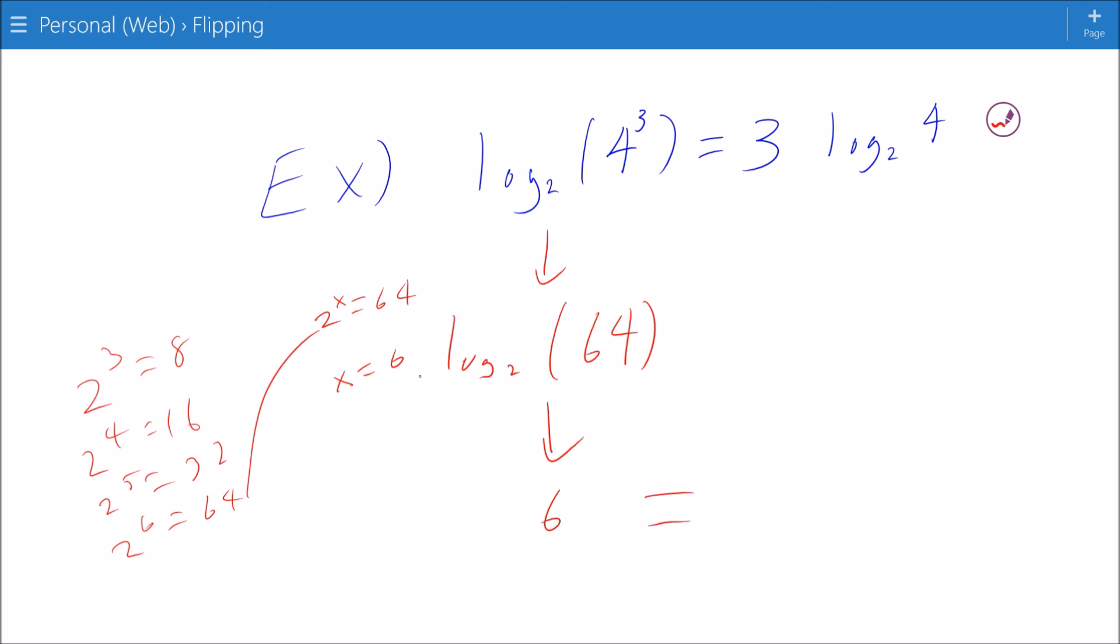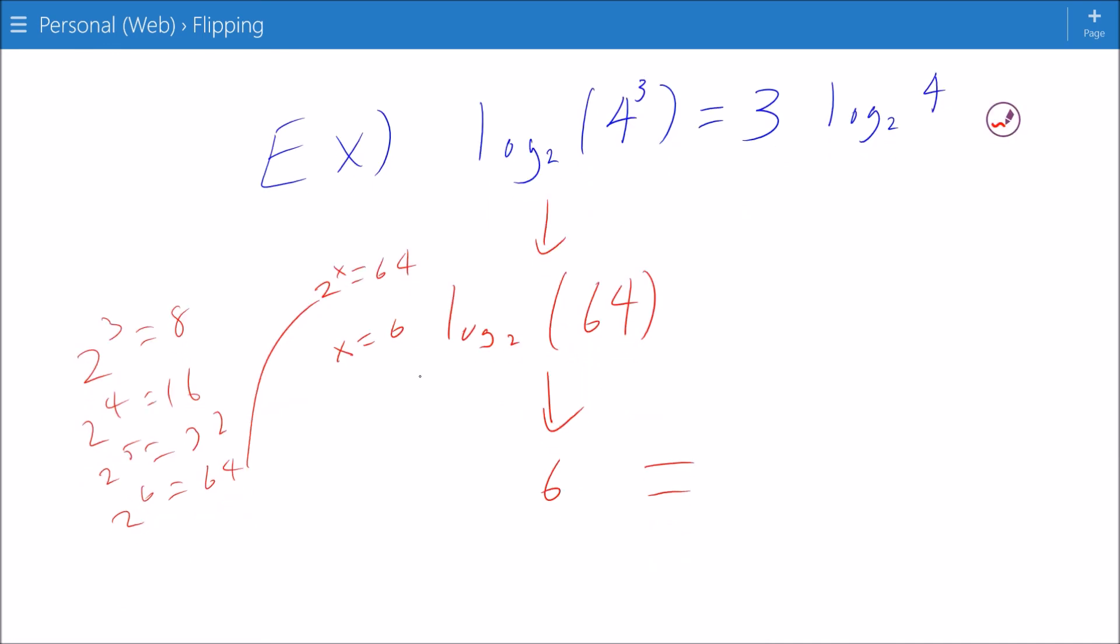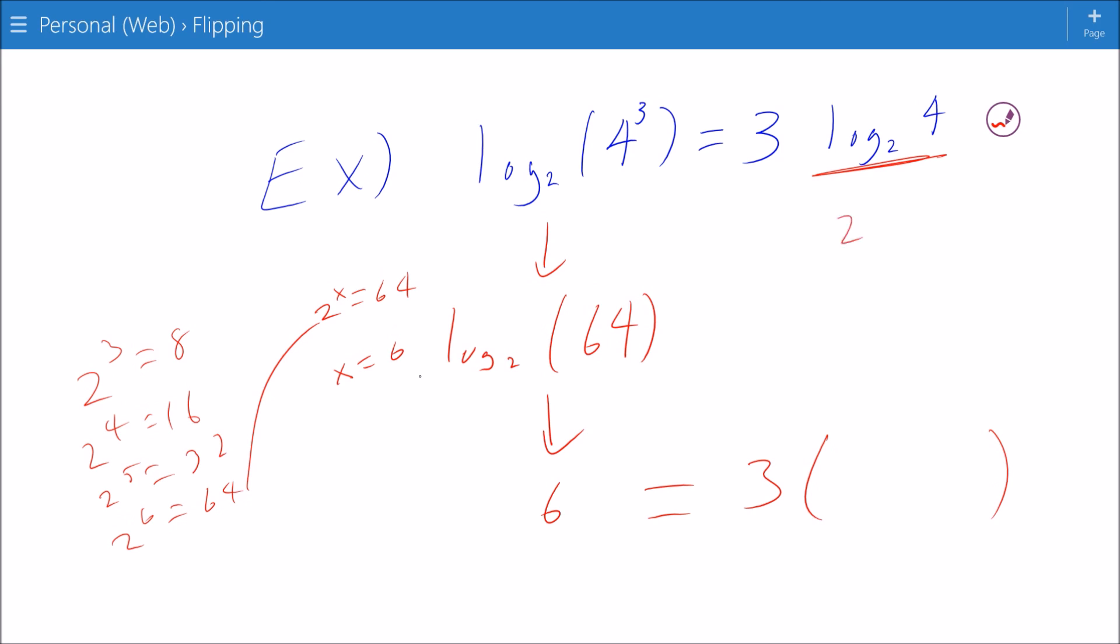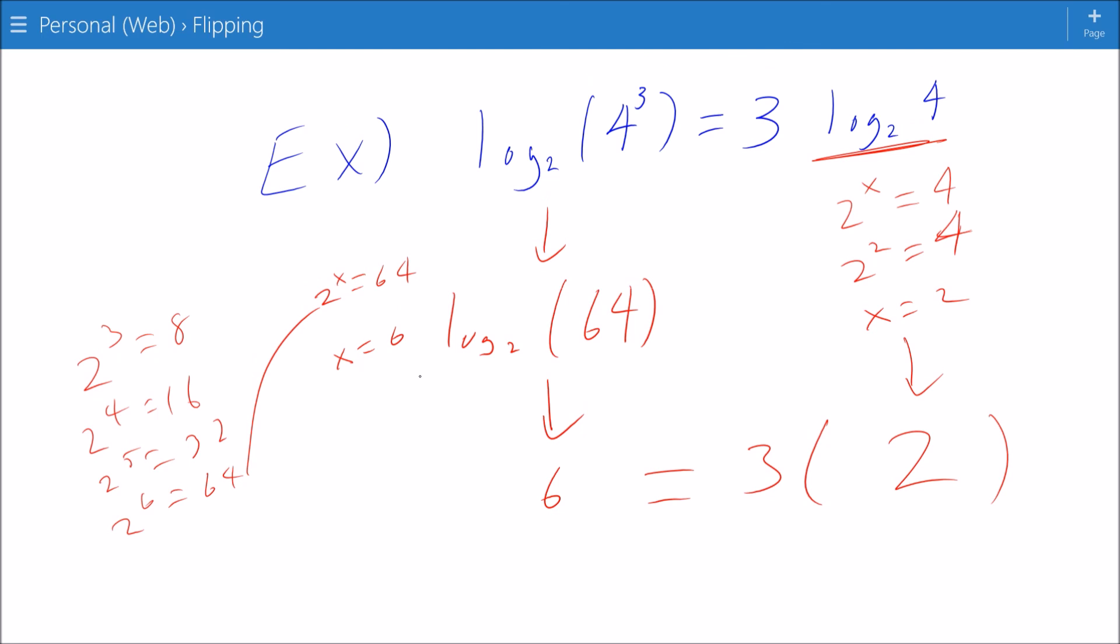So this logarithm has a value of 6 is equal to 3 times whatever this is right here, log base 2 of 4. And the value of this logarithm is x. If 2 to the x is equal to 4, we know that 2 squared equals 4, therefore x equals 2. That value goes there. 6 is equal to 3 times 2. We know that to be true, and there's a demonstration that this method works as well.